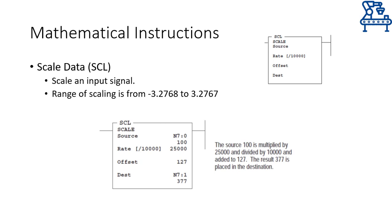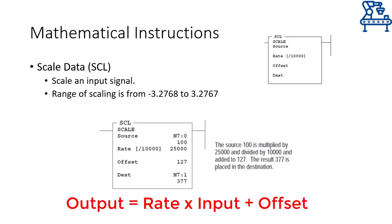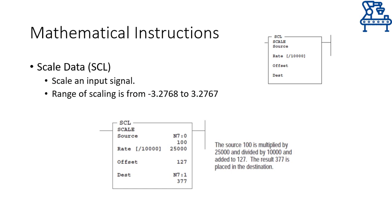Another instruction called the scale data instruction may be used to get a scaled input more quickly. This instruction requires the value of the gradient as the rate and the offset value. The input is multiplied by the rate and the offset is added to get the scaled output. However, in this instruction, the rate or gradient must be between -3.2768 and 3.2767. This instruction is used in place of the scale with parameters instruction when greater precision is required, as it can handle gradients up to the fourth decimal place.